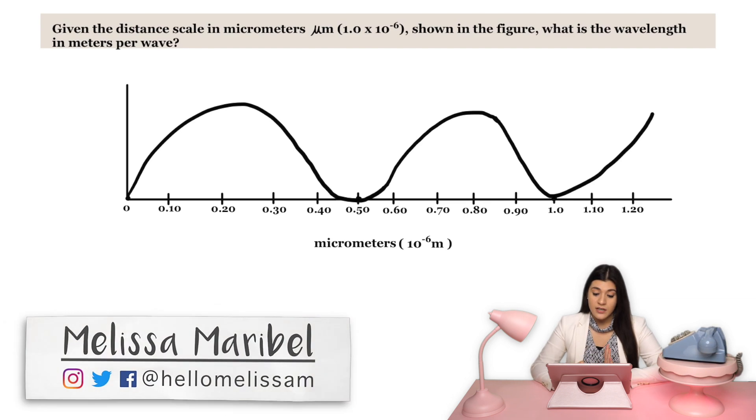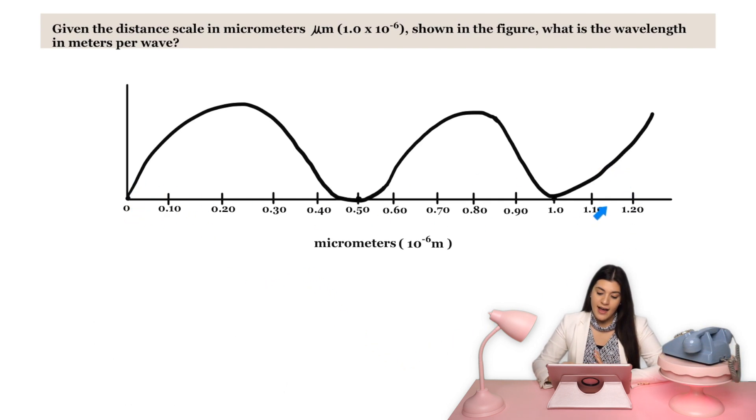Alright, so this question does give us the overall figure. And note that the x-axis is measured in micrometers. So though this says 10 to the negative 6 meters, that's just referring to 1 micrometer is equal to 10 to the negative 6 meters. That's what this is explaining.